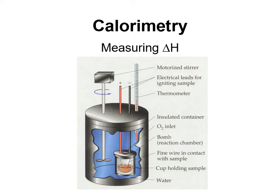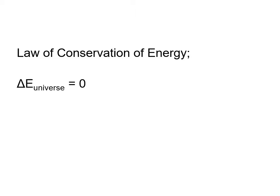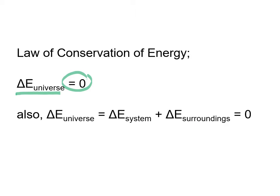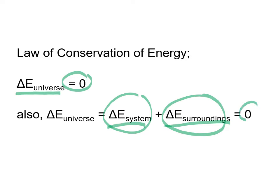Calorimetry is where we use the system and the surroundings, measuring the surroundings so we can figure out delta H. The law of conservation of energy says that the change in energy of the universe is zero — whatever amount of energy existed at the birth of the universe is the same now and always will be. There is no destruction of energy. If you divide the universe into the system and the surroundings, those two values must sum to zero.